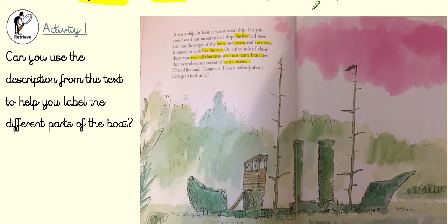You'll need to pause the video now and either download and print off the picture from Class Dojo, or have a go at copying it out on your own, and label the different parts of the ship: which is the bow, which is the stern, which are the funnels, and which are the masts? And for extra points, what do you think this part is? Once you think you've labelled all the parts, play the video to find out the answers.